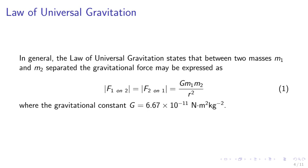Law of Universal Gravitation. In general, the law of universal gravitation states that between two masses m1 and m2 separated by distance r, the gravitational force may be expressed as G m1 m2 over r squared, where F1 on 2 equals F2 on 1 equals G m1 m2 over r squared. The gravitational constant G equals 6.67 times 10 to minus 11 newton meters squared per kilogram squared.